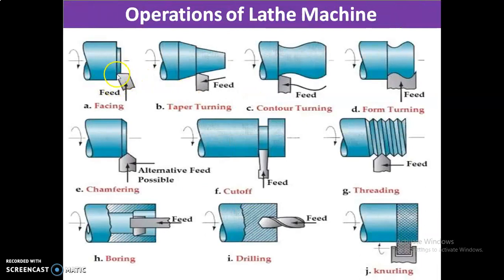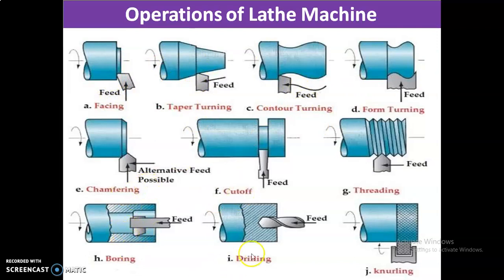Observing the diagram: this is a facing operation, taper turning, counter turning, chamfering, boring, drilling, and knurling. These are the general operations of the lathe machine.